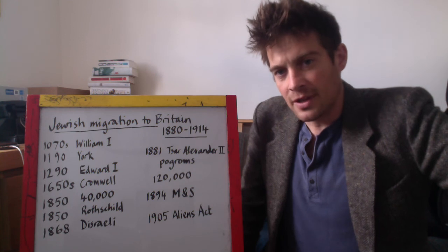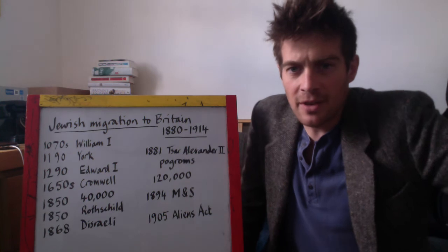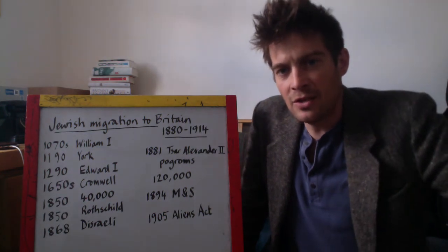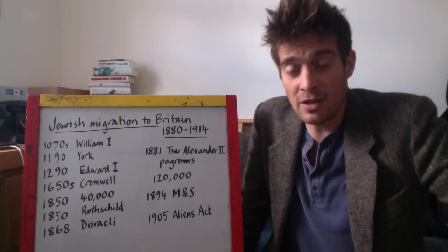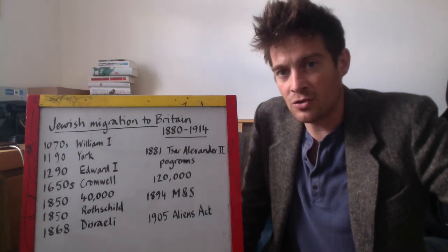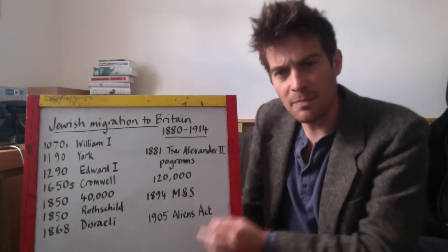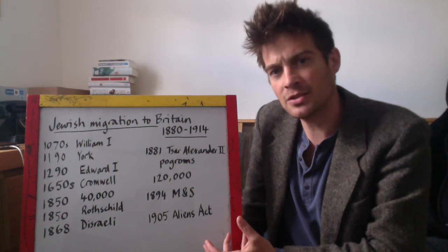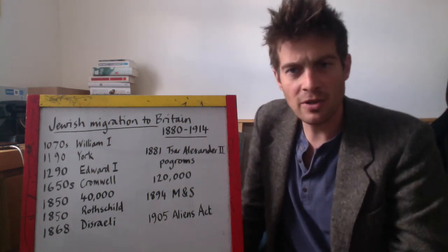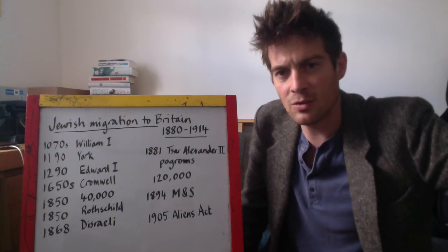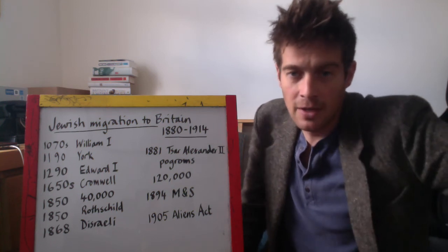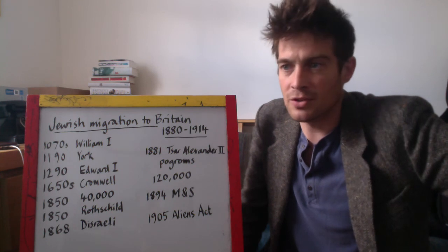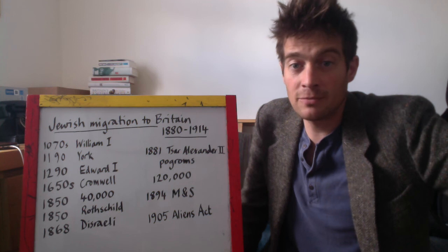Looking forward into the 1930s, as you'll study in great depth next year, when the Nazis took over in Germany, many Jewish people in Germany wanted to leave and come here — again, a free democratic country where they wouldn't be persecuted for their race or religion. But because of the debate that had happened in the 1900s and the Aliens Act that had been passed, there were quotas on migration, and a lot of those Jewish people who wanted to come here and get away from the Nazis were turned away — which is quite a shameful episode in our history. Some children were allowed in on their own, but many of the adults who wanted to escape Hitler were essentially sent back to Germany.